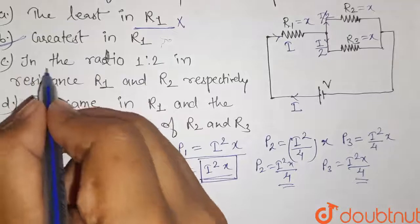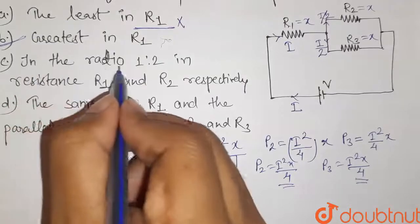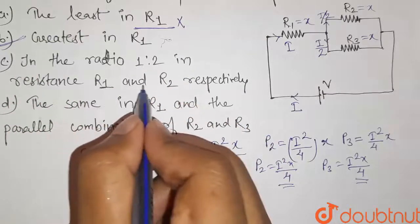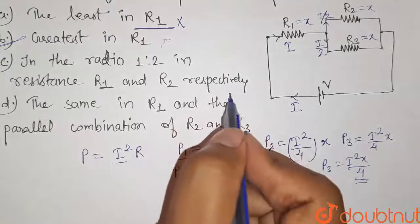Now have a look at other options as well. In the ratio 1 is to 2 in the resistance R1 and R2 respectively.